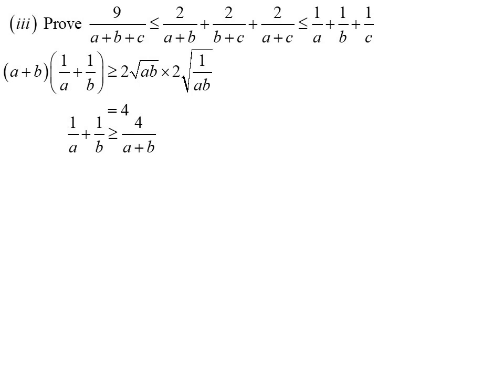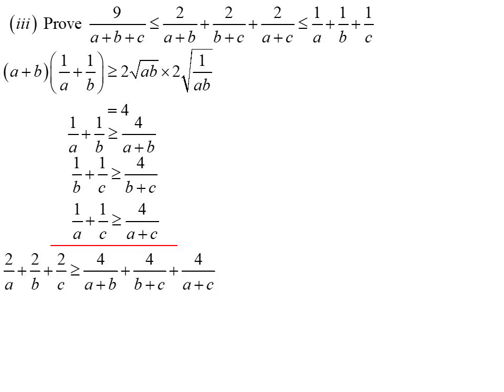Assuming A and B are positive, dividing by A plus B gives 1/A plus 1/B ≥ 4/(A+B). The same applies for 1/B plus 1/C and 1/A plus 1/C. Adding these three inequalities — all pointing the same direction — gives 2/A plus 2/B plus 2/C ≥ 4/(A+B) plus 4/(B+C) plus 4/(A+C). Dividing both sides by 2, we have the right-hand side of the inequality we want.